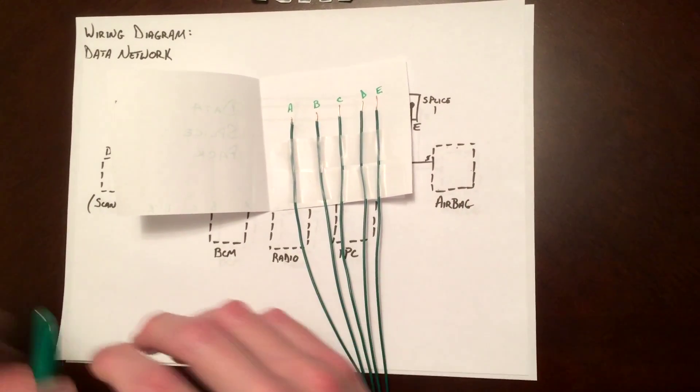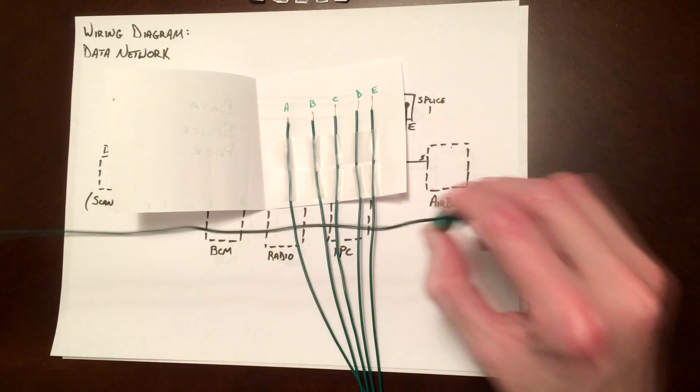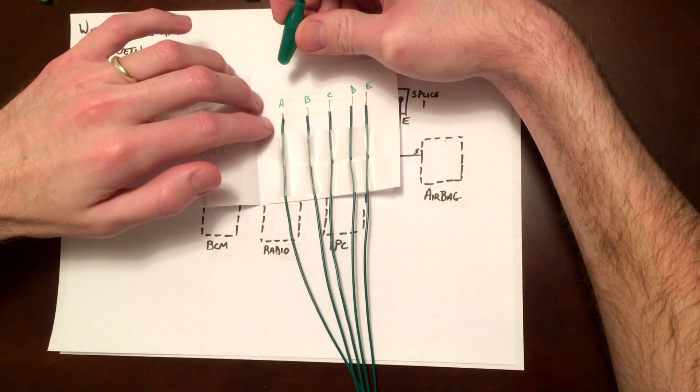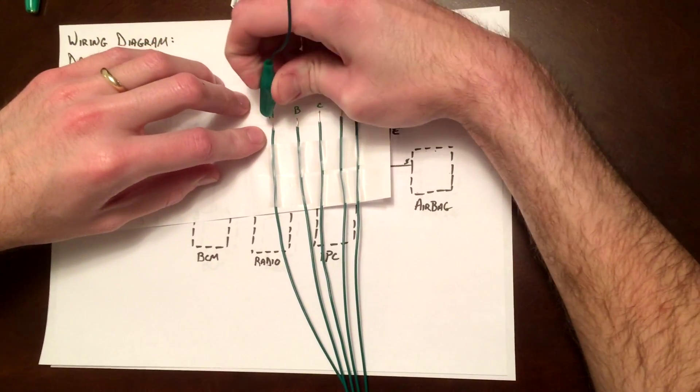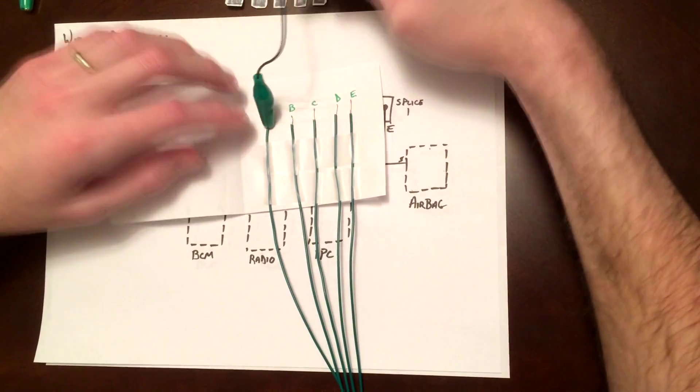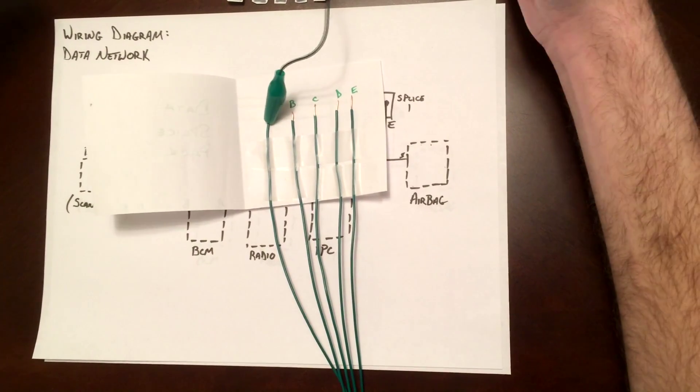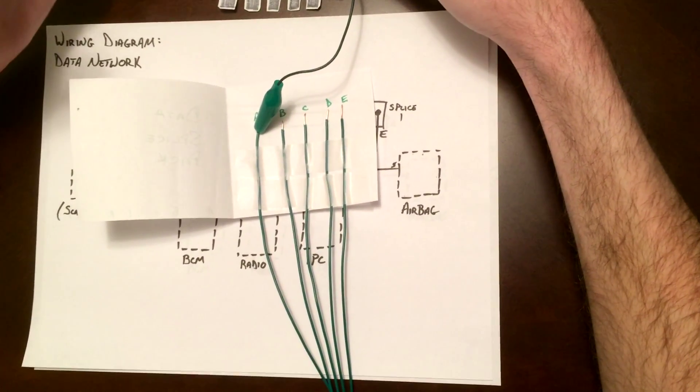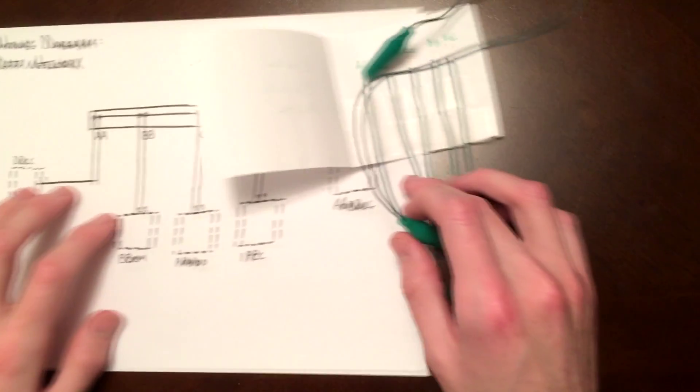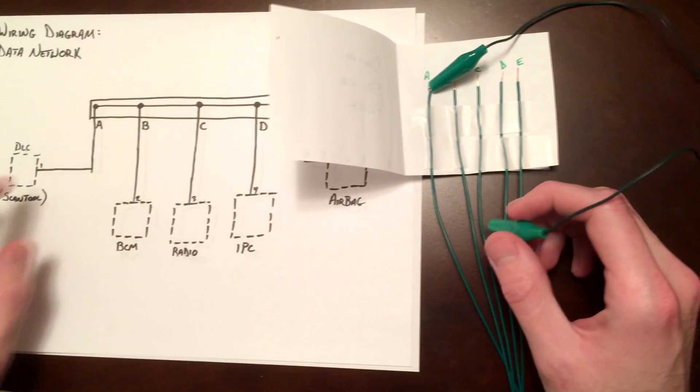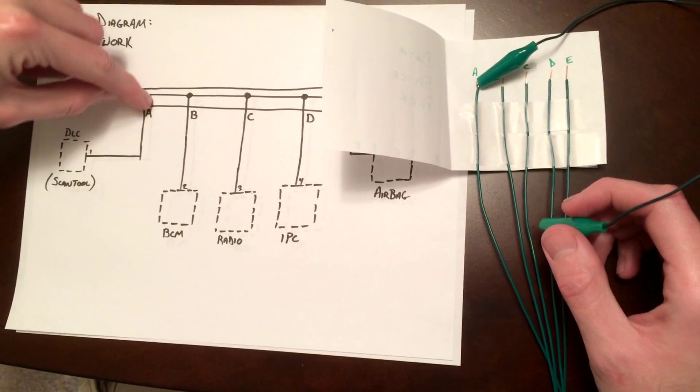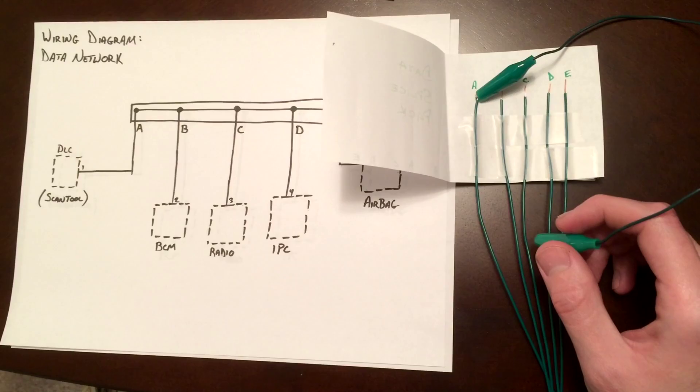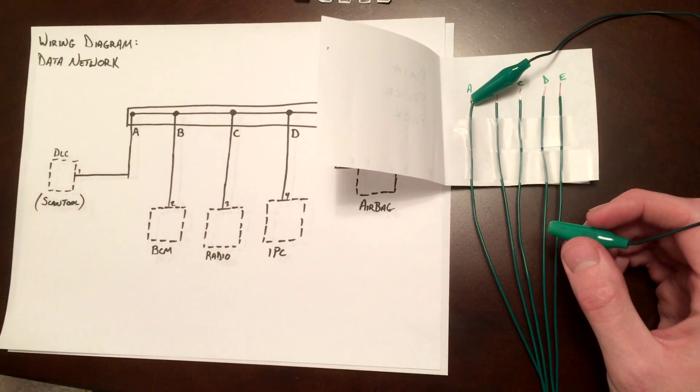And so all you have to do is take a jumper wire, and usually on GMs, pin A will always lead back to the DLC, which will be connected to your scan tool. And what you want to do is plug in your scan tool to the DLC, and then we are going to jumper from pin A to all the other modules, and we're going to find out if we have communication.